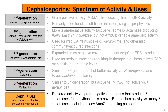Finally, the cephalosporin plus beta-lactamase inhibitor combinations have restored activity against gram-negative pathogens that produce beta-lactamases. For example, avibactam combined with ceftazidime, a third generation cephalosporin, is a novel BLI that has activity against many beta-lactamases, including many AmpC-producing pathogens. So these agents have the broadest spectrum of activity among all the cephalosporins.